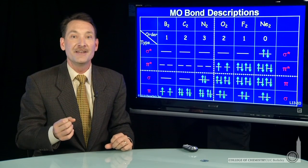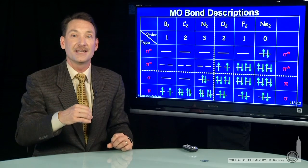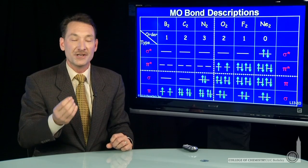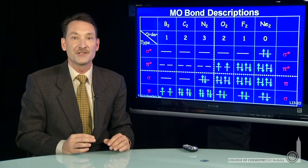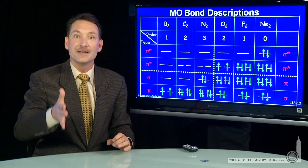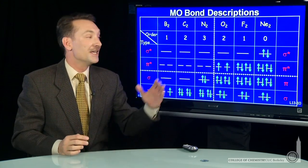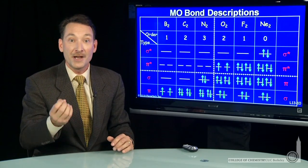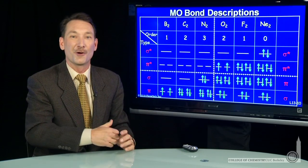So what we have is our molecular orbital theory predicting neon would not form a bond. It would have a bond order of 0. So our understanding of the periodic table of neon being an element that's particularly unreactive is reinforced by quantum mechanical molecular orbital theory.